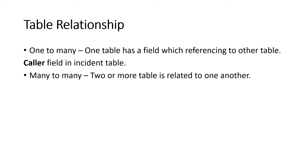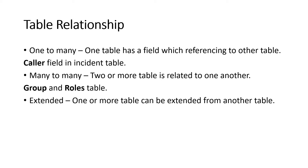Next is the many-to-many relationship, where two or more tables are related to one another. Taking the example of the group and roles tables — a group can contain multiple roles and a role can be assigned to multiple groups. Finally, extended relationship is where one or multiple tables can extend from another table — for example, incident, change, and problem tables are extended from the task table.